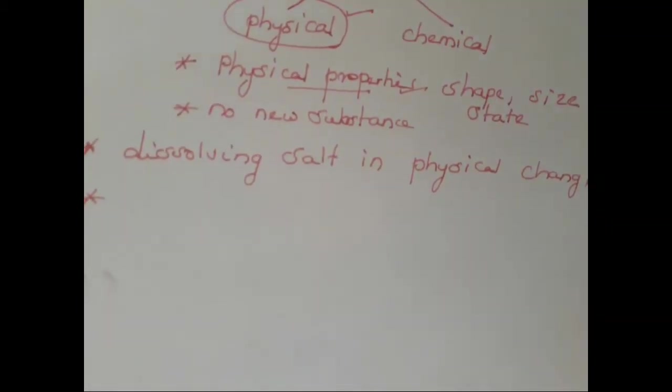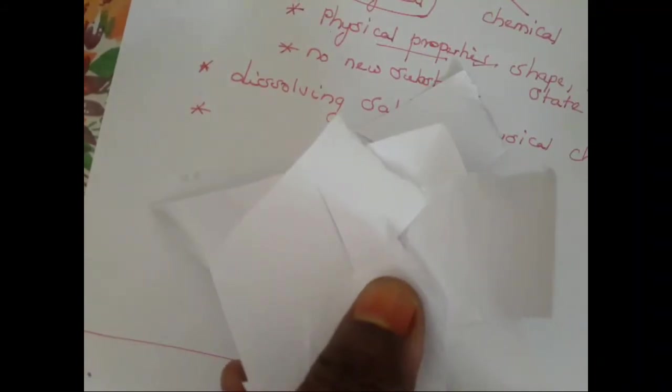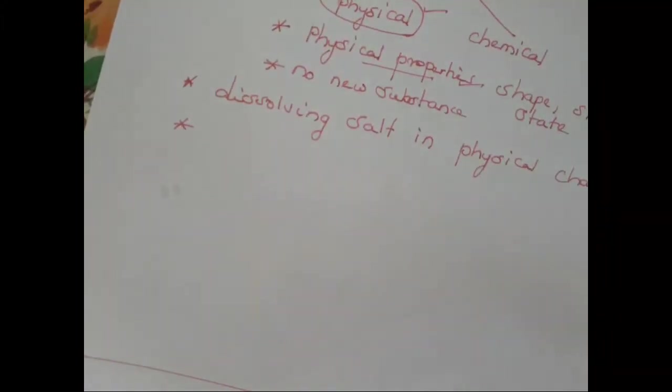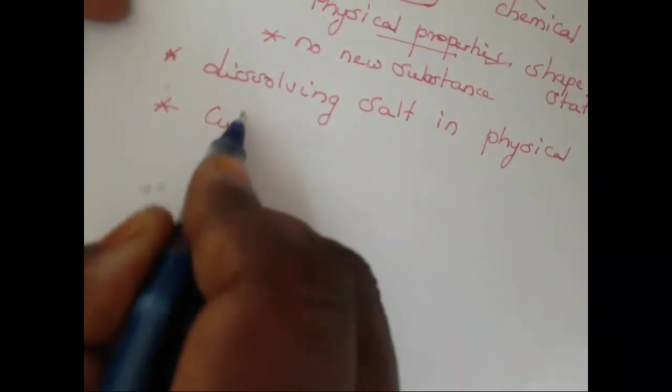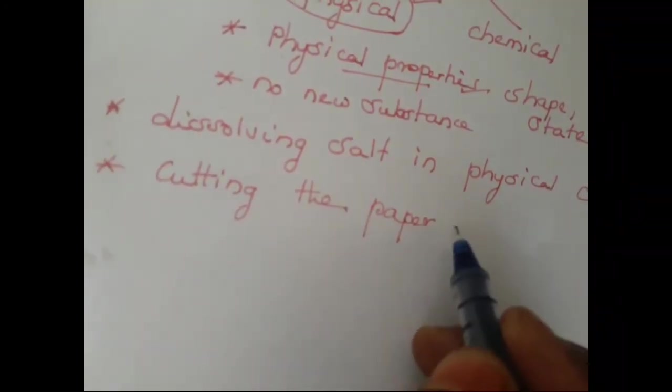Now let us see the second example. I am going to take a piece of paper. Now I am going to cut this paper into pieces. I have cut the paper into pieces. Was any new substance formed here? No. The paper is still paper even after being cut — it exists as paper. So we can say cutting the paper is a physical change, because no new substance is formed.